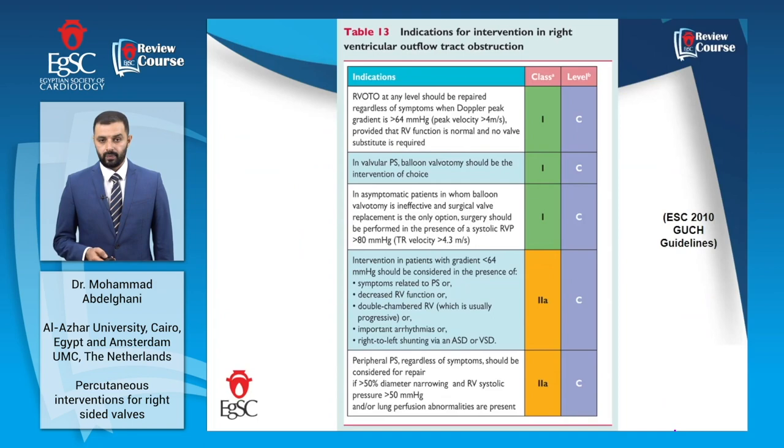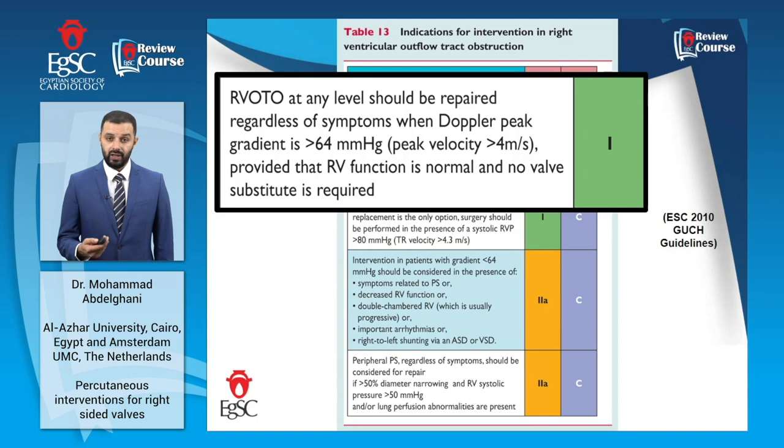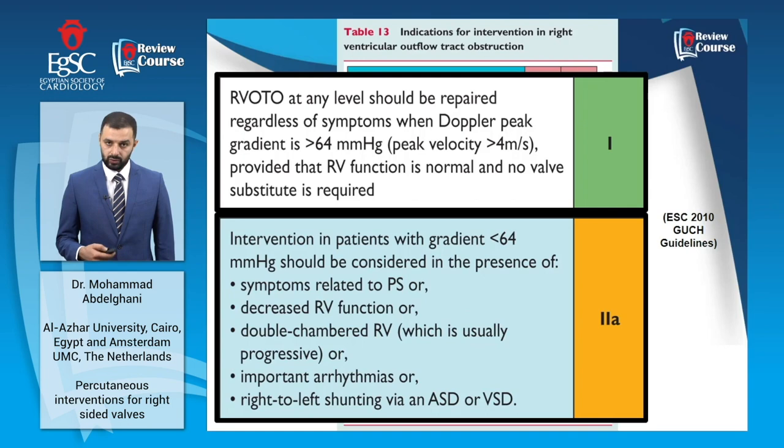According to the ESC-GUCH guidelines, RVOT obstruction that is severe, meaning the peak gradient is 65 mmHg or higher, should be intervened upon regardless of symptoms. Patients with less severe stenosis are also indicated for intervention if they have symptoms, RV dysfunction, adverse remodeling, or right-to-left shunt.